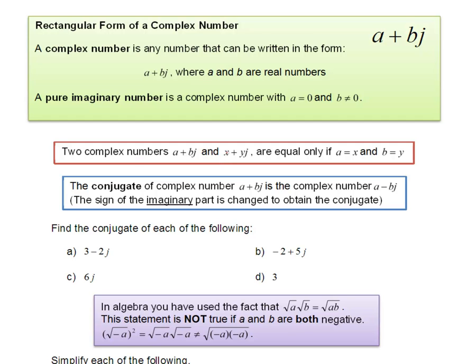In this video, we'll start by talking about the rectangular form of a complex number. The rectangular form is one of three ways that we're going to express complex numbers. Rectangular form is made up of something that looks like a plus bj, where a is a real number part and bj is referred to as the imaginary part.